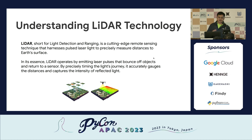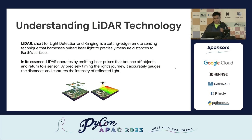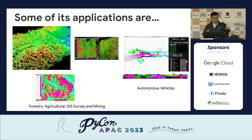First, we need to understand LiDAR technology. LiDAR stands for Light Detection and Ranging. By definition, it's a cutting-edge remote sensing technique that harnesses pulsed laser light to precisely measure distances to the Earth's surface. LiDAR operates by emitting laser pulses that bounce off objects in the physical world and return to the sensor. The sensor analyzes the distance and timing of the reflected light and stores that as point cloud data. Most of its applications are in forestry, agriculture, GIS (global information systems), and mining.